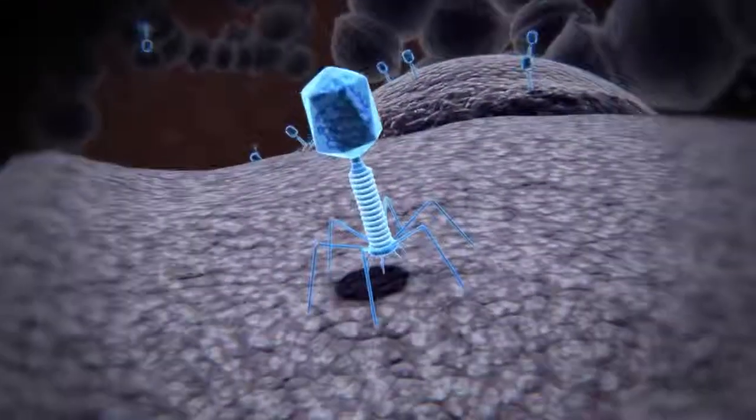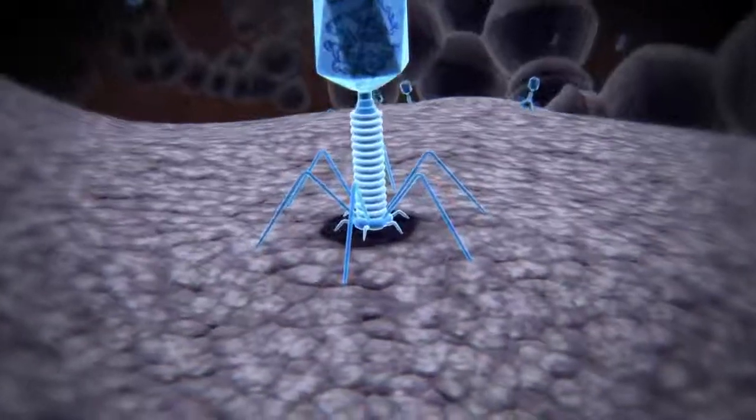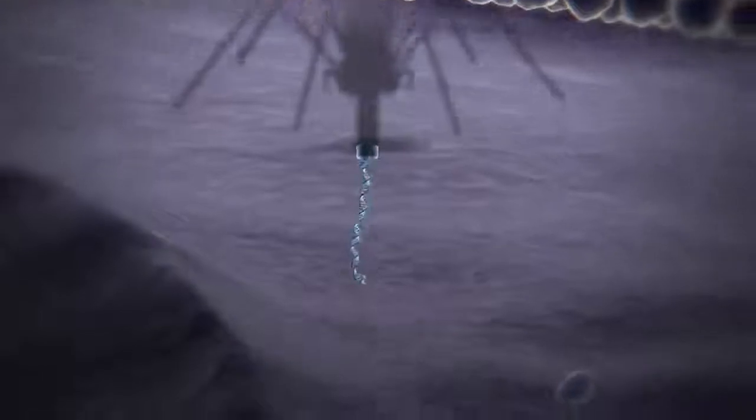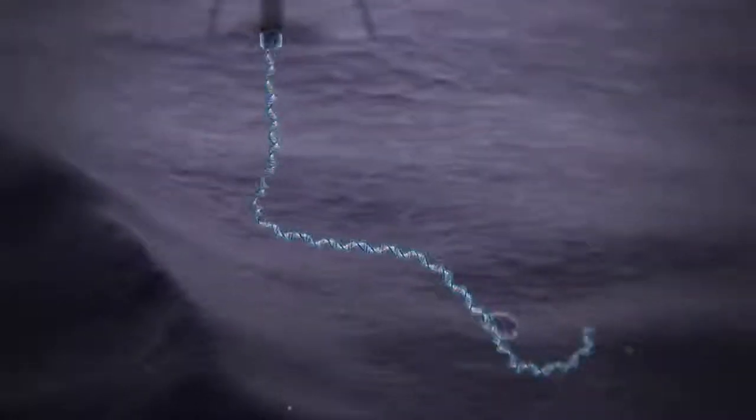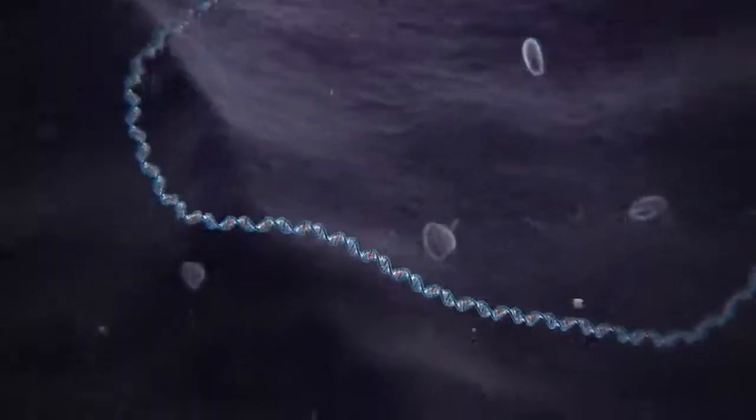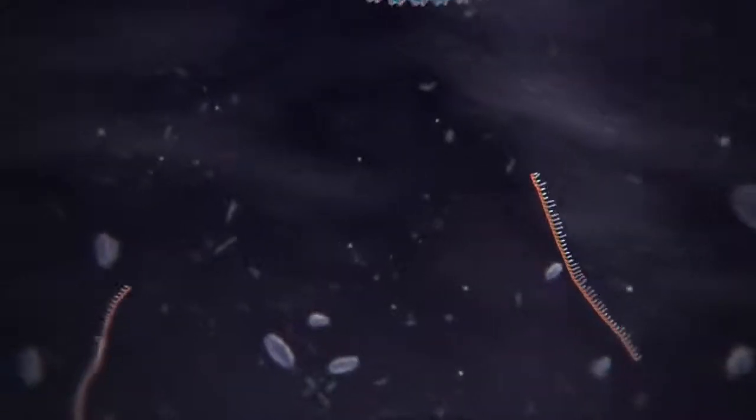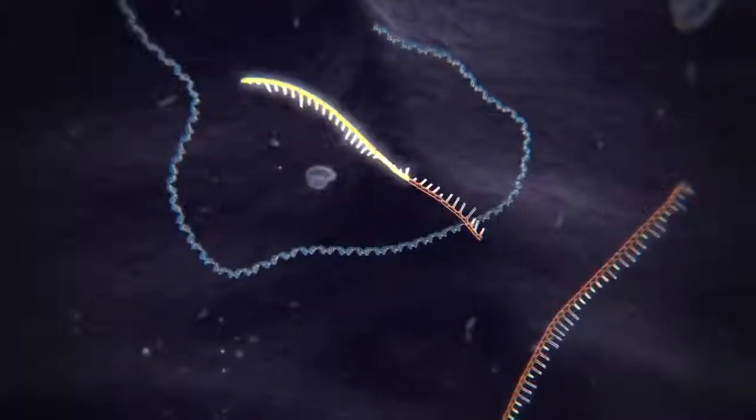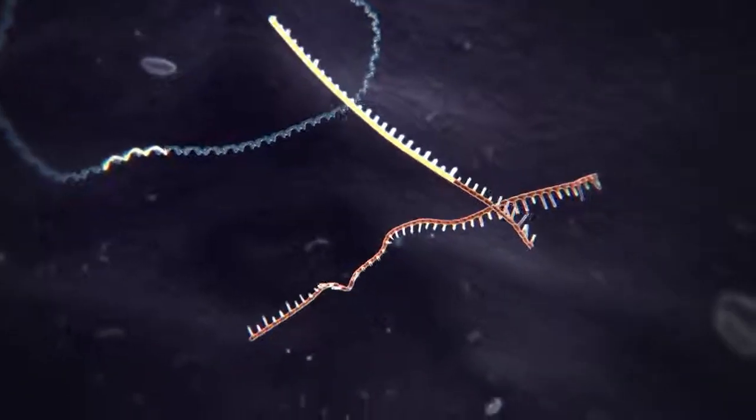The CRISPR method is based on a natural system used by bacteria to protect themselves from infection by viruses. When the bacterium detects the presence of virus DNA, it produces two types of short RNA, one of which contains a sequence that matches that of the invading virus.